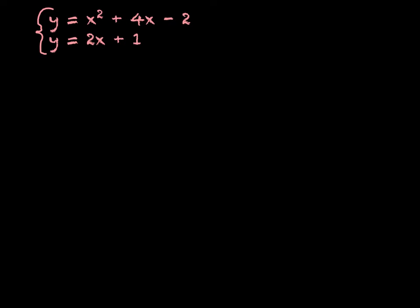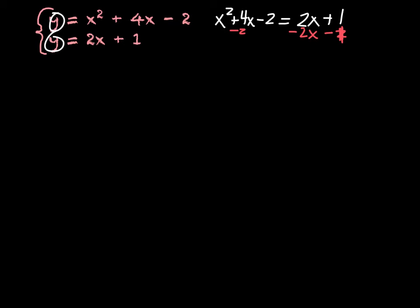For the next example, we already have both equations set equal to y, so we can go right to the step of setting x squared plus 4x minus 2 equal to 2x plus 1. We set them equal to each other right away, and then we need to solve for 0. So I'm going to subtract 2x and subtract 1 from both sides, giving me x squared plus 2x minus 3 equals 0.